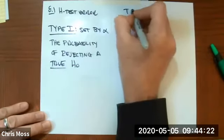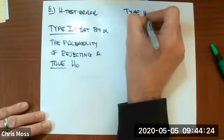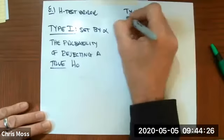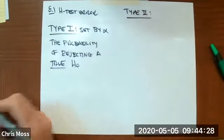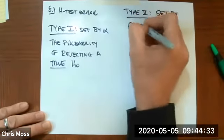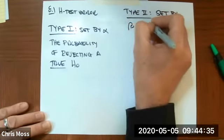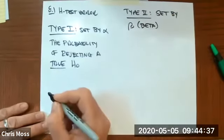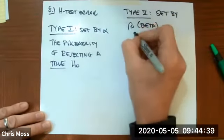We also have a type 2 error. This type 2 error is set by beta. Again, it's another Greek letter. And this is the probability.